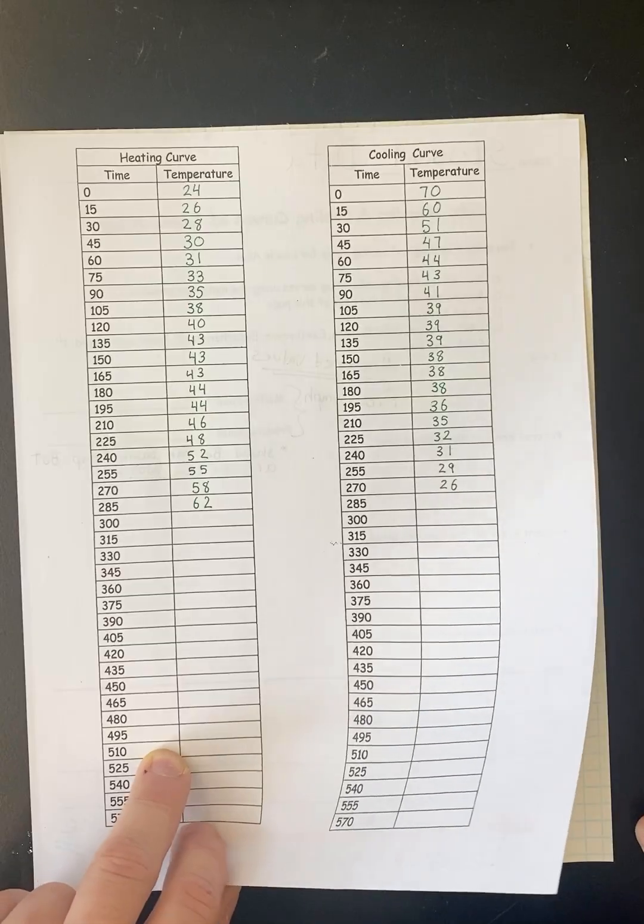But basically what we're going to do is we're going to graph the data and we're going to get a heating cooling curve. So you're going to need a sheet of graph paper. We're going to turn it sideways.